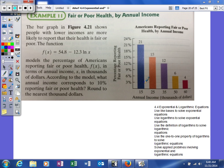Alright, so we're just going to take our formula and plug it in. So f(x) is basically the percentage, so we're trying to get a percentage of 10. So we'll say 10 is equal to 54.8 minus 12.3 natural log of x.